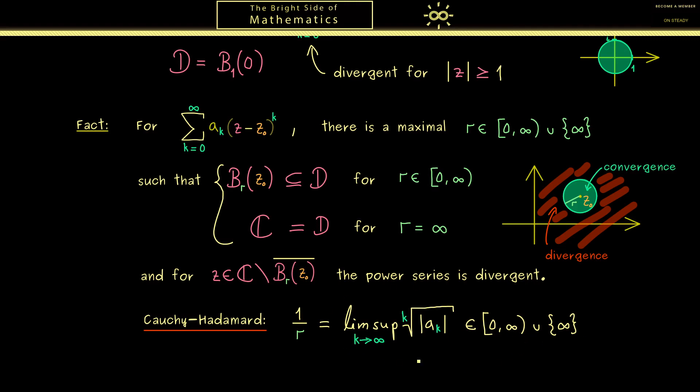It's either a real number between 0 and infinity or the symbol infinity. And then simply the inverse of this number gives us our maximal r. There of course you should know inverses with 0 and infinity are here defined by this formula. Hence the best case scenario is if this limsup is 0.